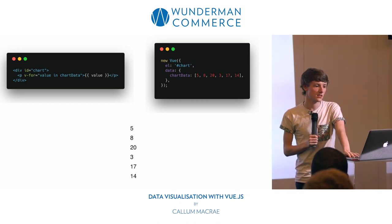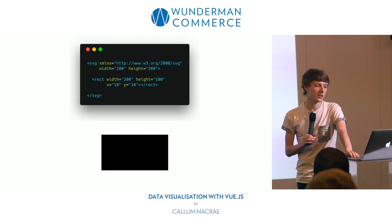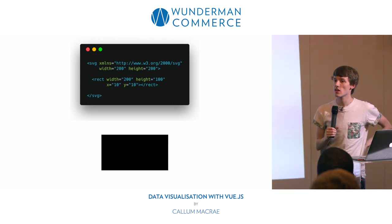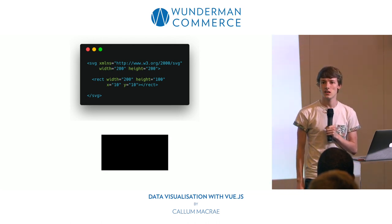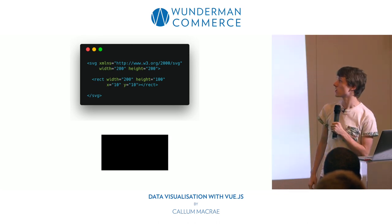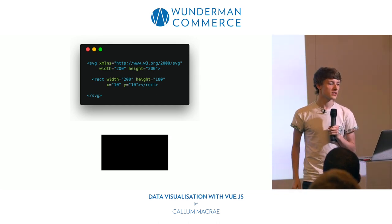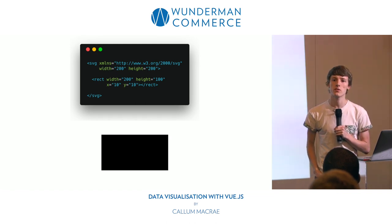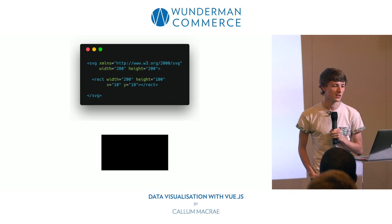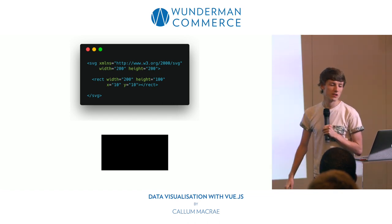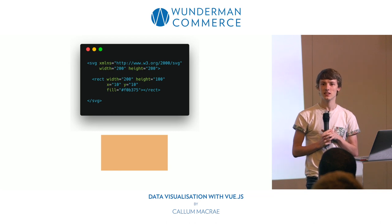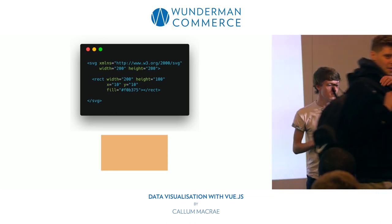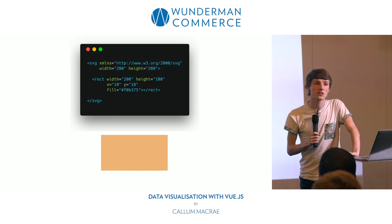Let's leave Vue alone for a bit and look at SVG. SVG is XML — you can put it in your documents directly, you don't have to use it as a .SVG image. Here we've just got a black rectangle. We've defined our SVG element, and inside we've got our rect element. We've given it a width, height, and X and Y position. That's just a black rectangle, but let's make it a nice orange beige color by adding a fill attribute.